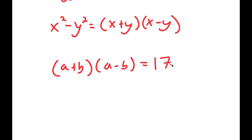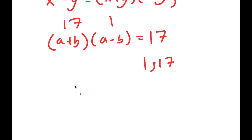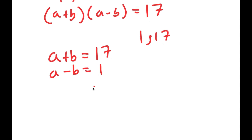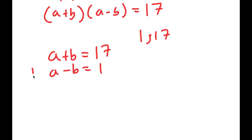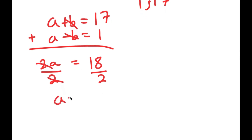The only factors of 17 are 1 and 17, meaning one of these two expressions must equal 17 and the other must equal 1. Since a plus b is greater than a minus b, we get a plus b equals 17 and a minus b equals 1. Adding these two equations together: a plus a is 2a, b minus b cancels out, and 17 plus 1 is 18. So 2a equals 18, and dividing both sides by 2, I get a equals 9.